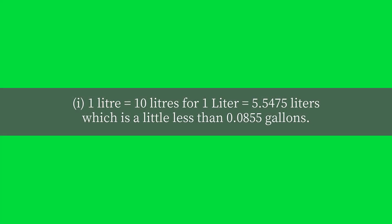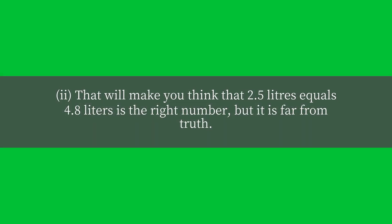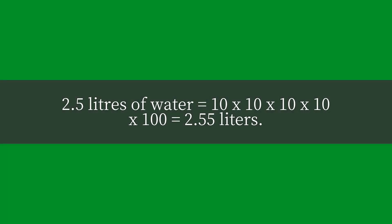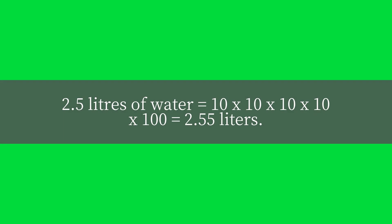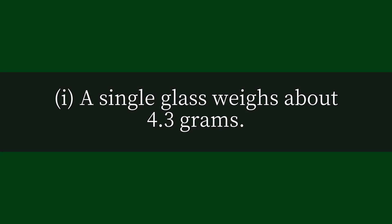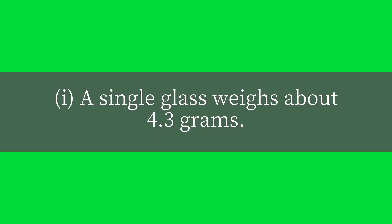1 liter equals 10 liters, or 1 liter equals 5.5475 liters, which is a little less than 0.0855 gallons. That will make you think that 2.5 liters equals 4.8 liters is the right number, but it is far from the truth. 2.5 liters of water equals 10x10x10x10 times 100, which is equal to 2.55 liters. A single glass weighs about 4.3 grams.